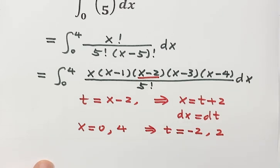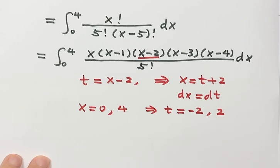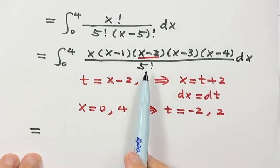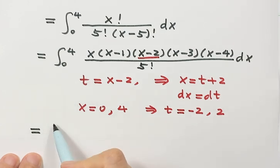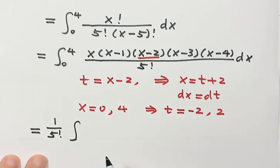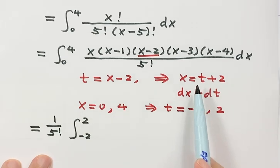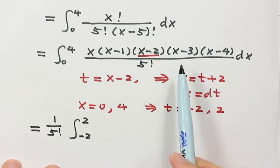Now let's continue this equal sign. First, let's take out the constant outside. Here we have 1 over 5 factorial. Then here, the lower bound is negative 2, the upper bound is 2. So then x equals t plus 2 to replace all the x in the expression.